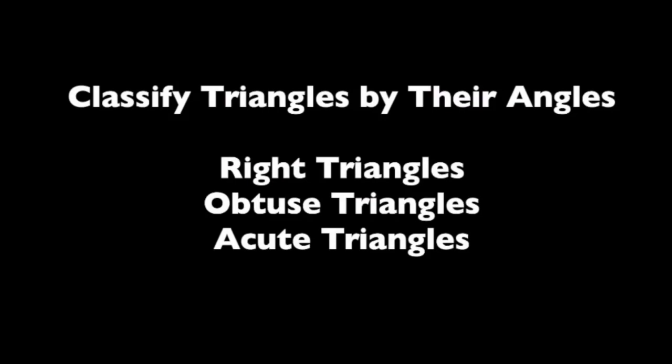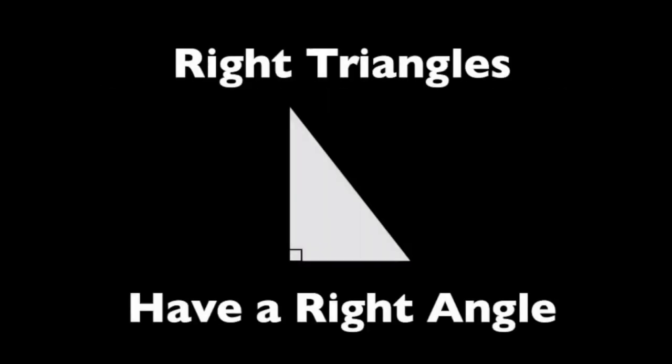You can classify or group triangles by the kind of angles that they have. There's right, obtuse, and acute triangles.